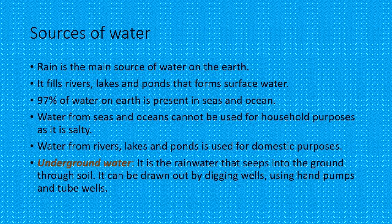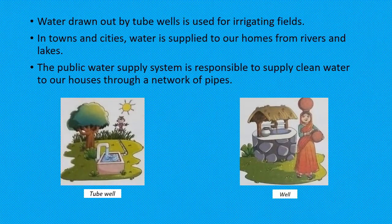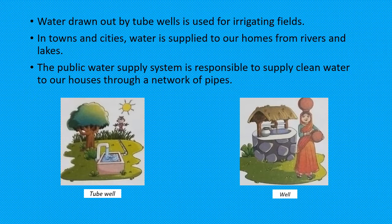Underground Water: It is the rainwater that seeps into the ground through soil. It can be drawn out by digging wells, using hand pumps and tube wells. Water drawn out by tube wells is used for irrigating fields. In towns and cities, water is supplied to our homes from rivers and lakes. The public water supply system is responsible for supplying clean water to our houses through a network of pipes.